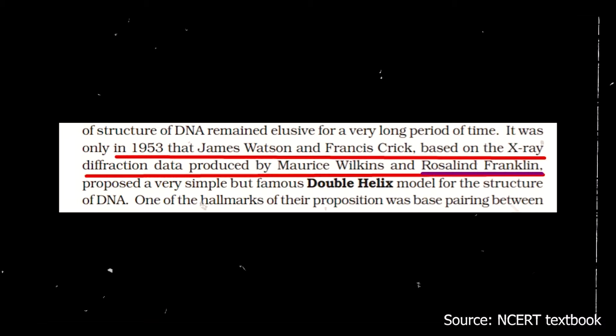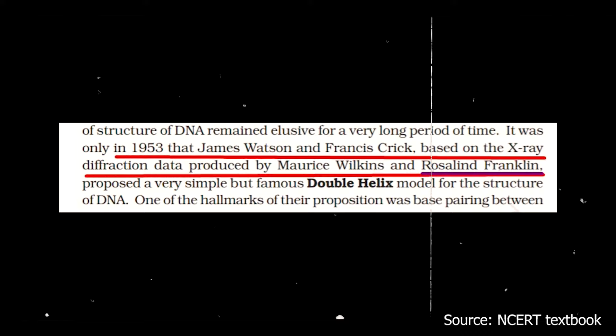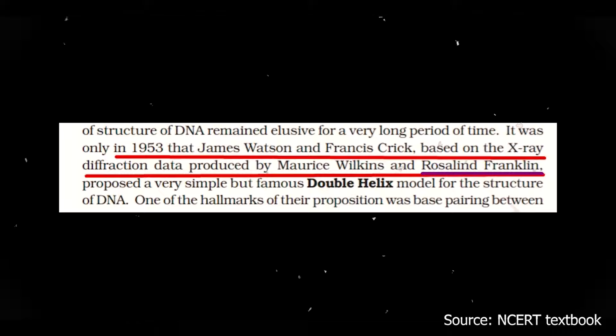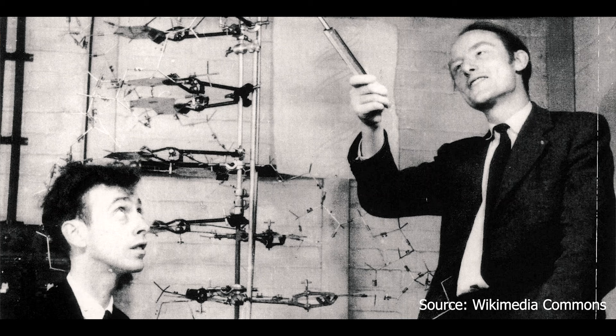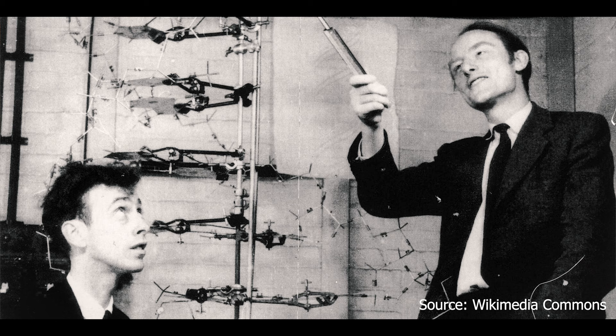Today, whether or not we are scientists, most of us think of something like this when we say DNA. But we didn't always know that DNA looked like this — we know it thanks to the contributions of a few scientists. According to our NCERT textbook, it was only in 1953 that James Watson and Francis Crick, based on the X-ray diffraction data produced by Maurice Wilkins and Rosalind Franklin, proposed the famous double helix model for the structure of DNA. Watson and Crick have been credited with the discovery, but they based their structure on data obtained by Wilkins and Rosalind Franklin, which brings us back to this famous photograph.